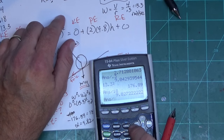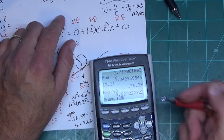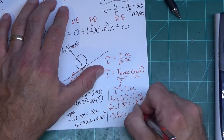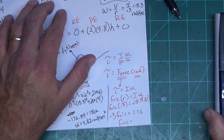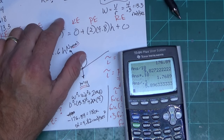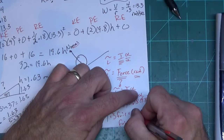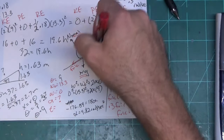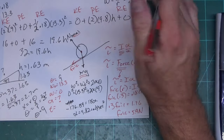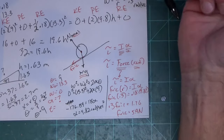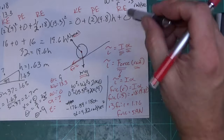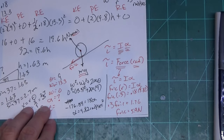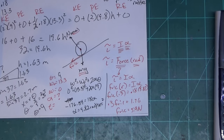Now applying torque = Iα: friction × r = Iα, so friction × 0.3 = 0.18 × 9.82 = 1.76. Therefore friction = 1.76 ÷ 0.3 ≈ 5.9 N. That's the friction force required to maintain rolling without slipping. Don't try to find friction through force components in x and y — use torque, since rolling friction isn't consumed as energy loss.